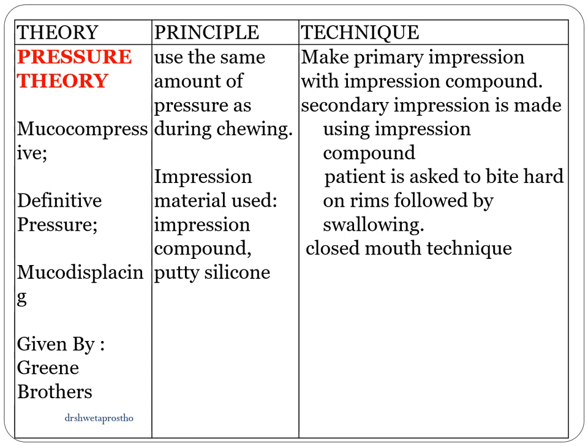To summarize pressure theory: also called mucocompressive, definitive pressure, or mucodisplacing theory, given by Green Brothers. It uses the same pressure as during chewing; materials used are impression compound and putty silicone. The technique involves a primary impression with compound followed by a secondary impression with compound using a closed mouth technique — patient bites hard and swallows. Its applicability is for making the primary impression.